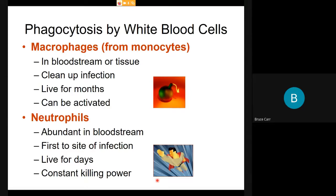Macrophages differentiate from monocytes and are present in tissue. They clean up any infected area, live for months, and can be energized and activated by conditions in the body. Macrophages also have a routine job of detecting and removing debris — when red blood cells are being turned over constantly, it's macrophages in locations like the spleen or liver that detect worn-out red blood cells and remove them from circulation.